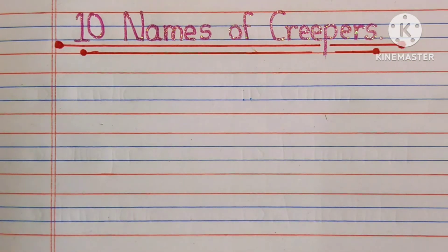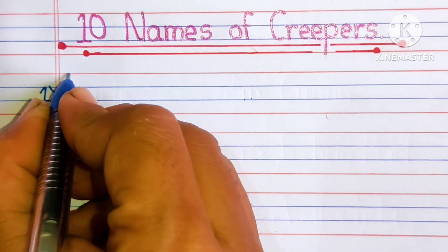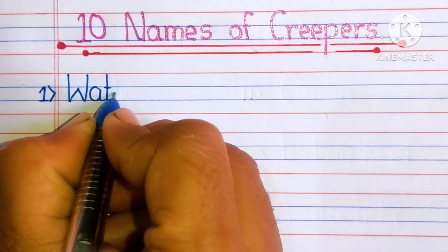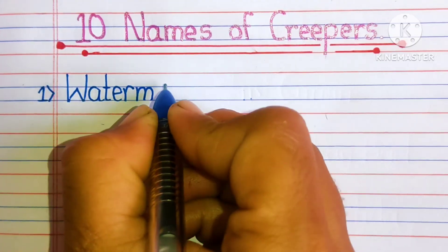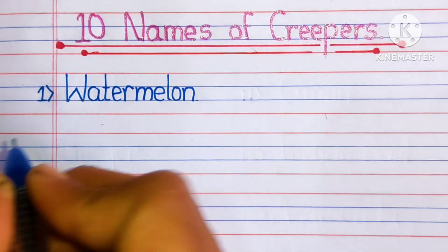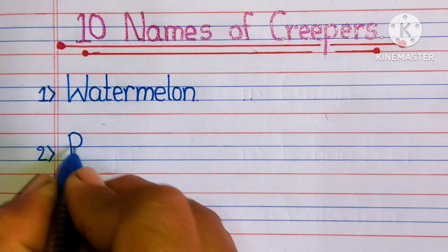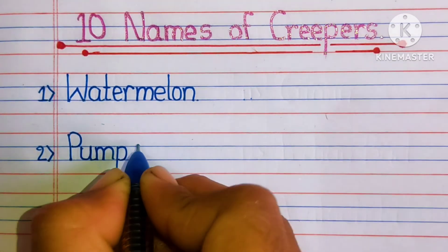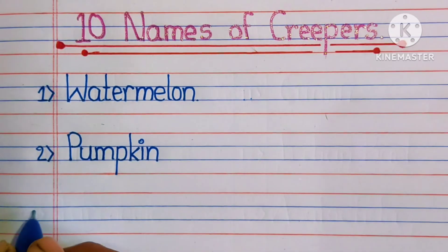Let's see the creepers name. First one watermelon. Second one creeper is pumpkin.